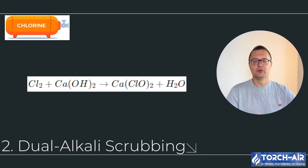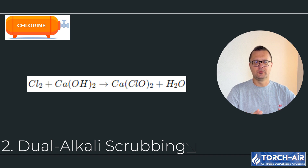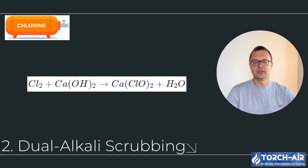The second technique is dual alkali scrubbing. In some cases, using a combination of NaOH and calcium hydroxide — Ca(OH)2, or lime — enhances chlorine neutralization. This dual alkali system is highly efficient for capturing both chlorine gas and other acidic gases simultaneously. The process is similar to wet scrubbing, but the lime slurry enhances the neutralization process. This is particularly useful when dealing with complex emissions that contain multiple contaminants. Best for industrial setups with mixed gases or where high chlorine concentrations are common.